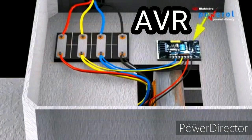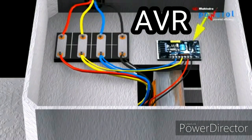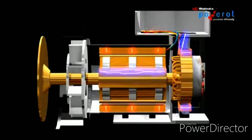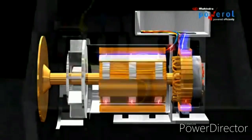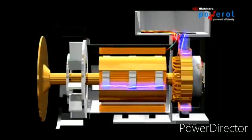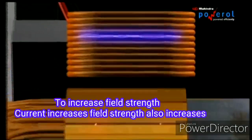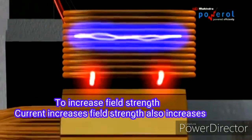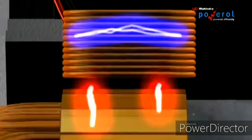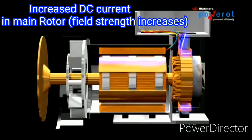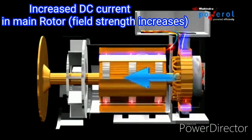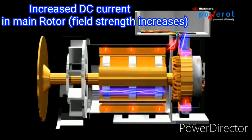Now we can see the AVR. The AVR is an automatic voltage regulator. The current will vary from the exciter stator. For example, when the voltage is low, we will increase the magnetic field strength in the exciter stator. The current is also increased. The AVR will change the low voltage, and the current will change in the exciter stator, which is the main state of the magnetic field strength.